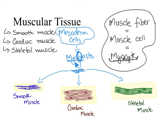Smooth muscle makes up the wall of hollow organs and we do not have control over it. Cardiac muscle is found in the heart and we also do not have voluntary control over it. The third type is skeletal muscle. With the name 'skeletal,' where do you think we find it? We find skeletal muscle attaching to our skeleton, allowing our bones to move. Can you control the muscles that allow you to walk or handwrite? Yes — skeletal muscle is the muscle we have voluntary control over. We can consciously and voluntarily control our skeletal muscles.